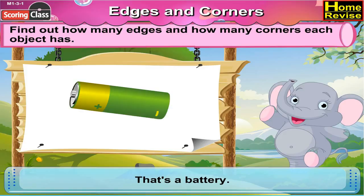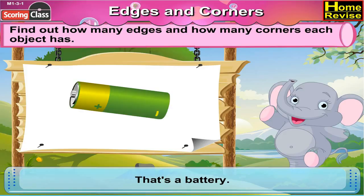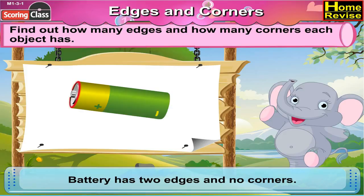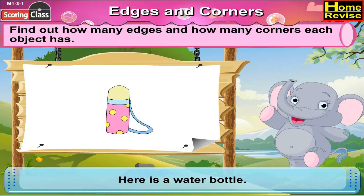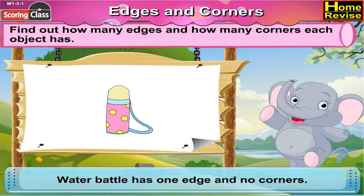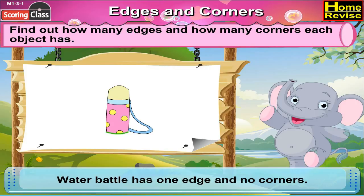That's a battery. A battery has two edges and no corners. Here's a water bottle. A water bottle has one edge and no corners.